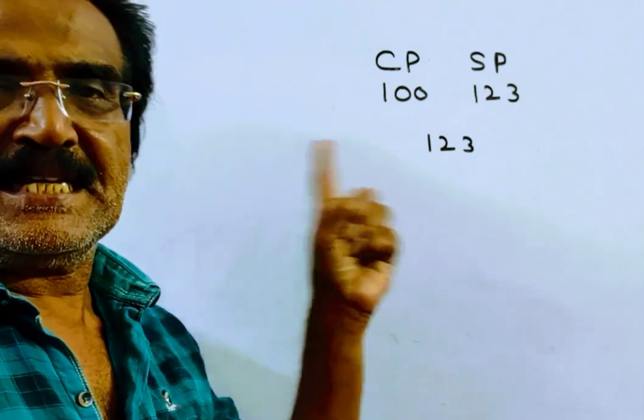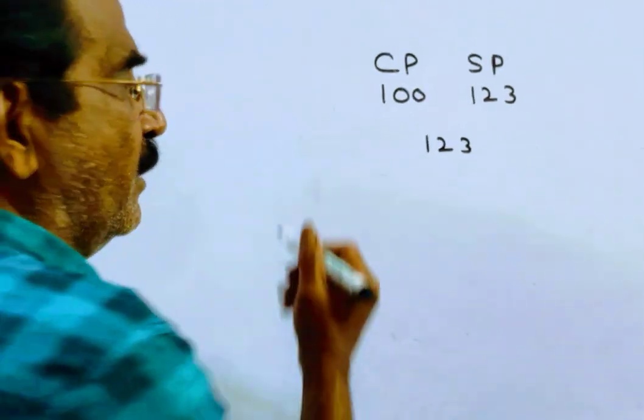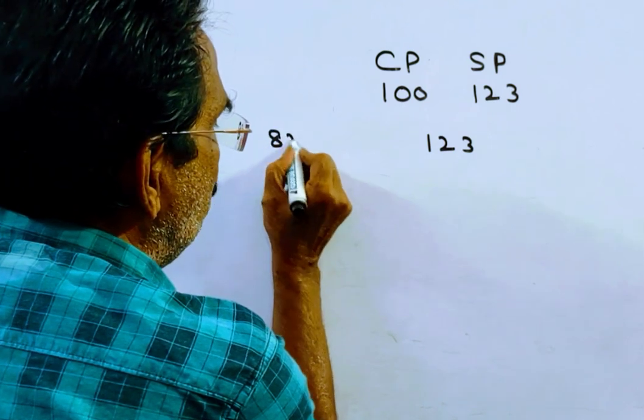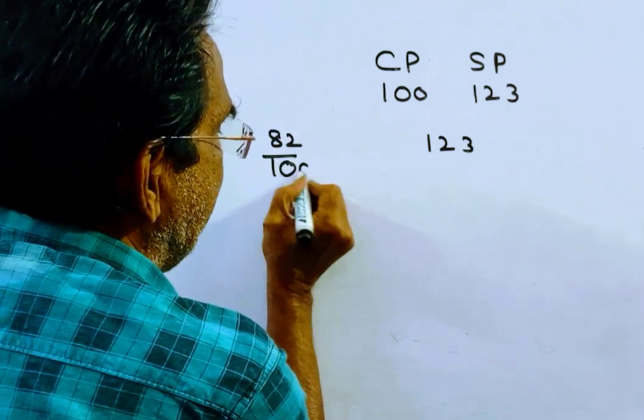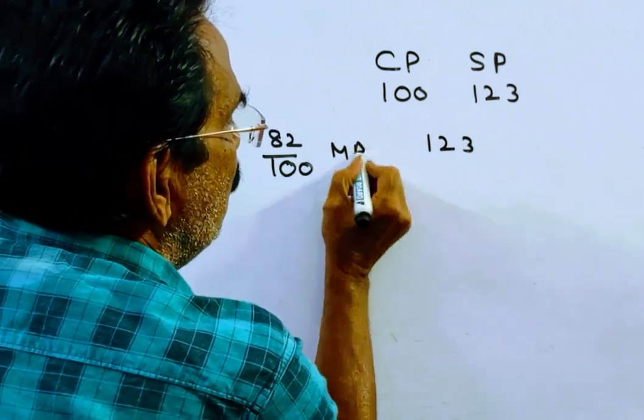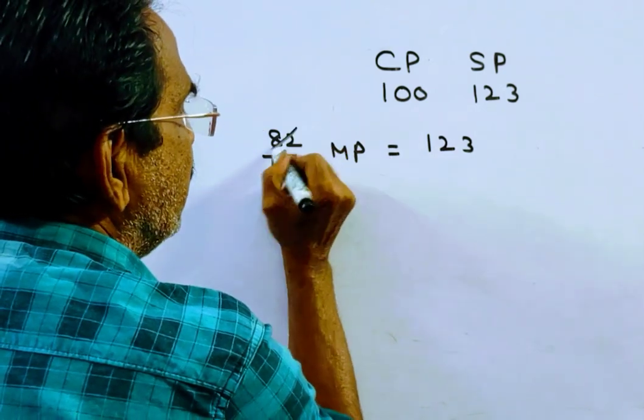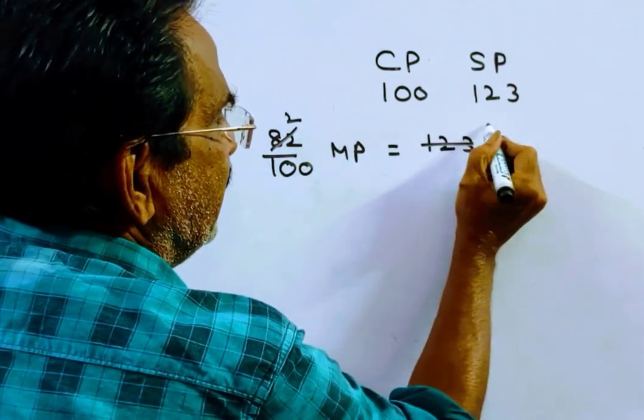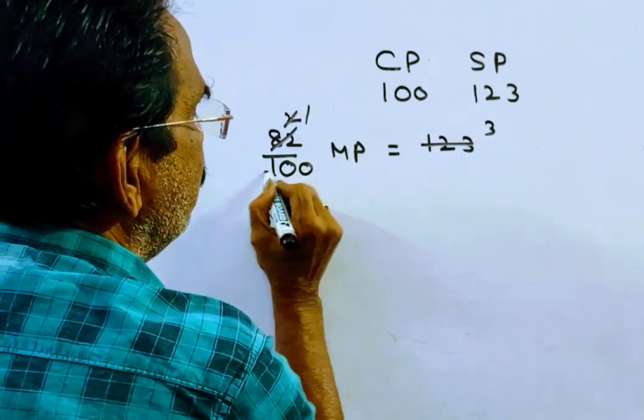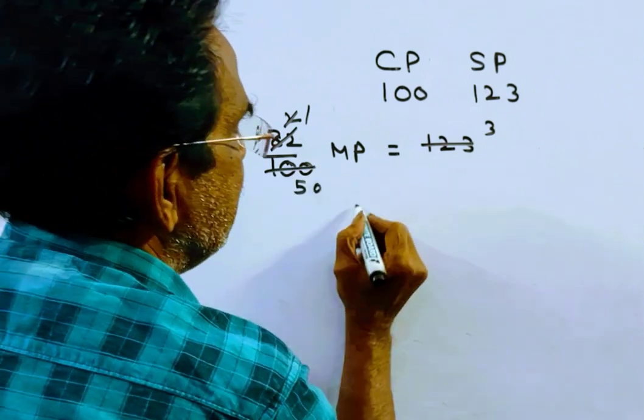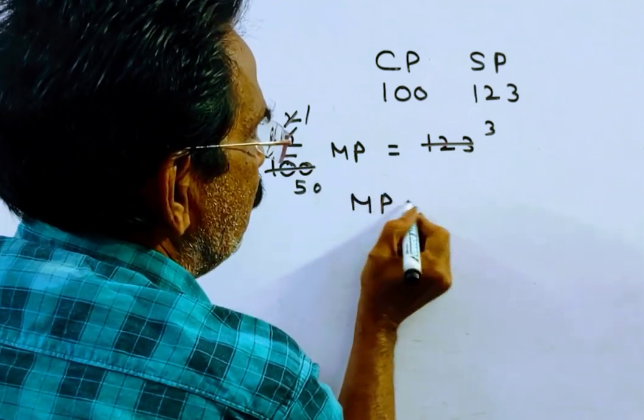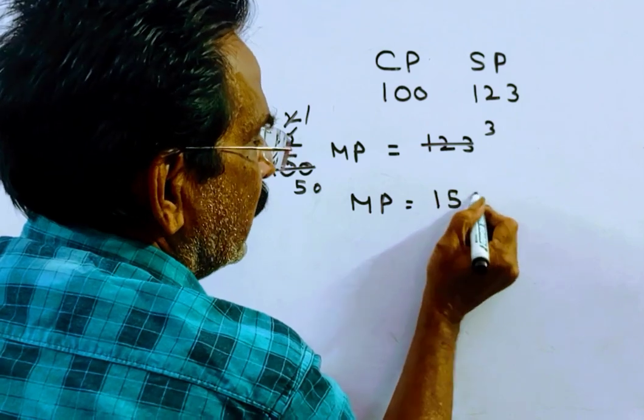82 percent of the marked price is equal to 123. So, 82 by 100 times MP equals 123. Cross multiplying, we get marked price is equal to 150.